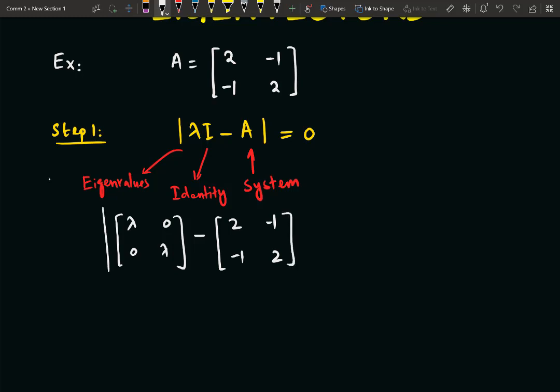And the determinant of this matrix we have to put it equal to 0. So here we will have [λ-2, 1; 1, λ-2], and this is the determinant.